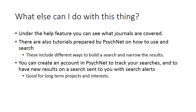So what else can you do with PsycNet? Under the help feature, you can see what journals are covered. You can also view tutorials written by PsycNet on how to use the various searches, including different ways to build a search and narrow results specific to the algorithms in PsycNet. You can also create an account in PsycNet that allows you to track your searches and have new results on a specific search sent to you in what's called a search alert — an email sent to you on a regular basis that you can determine. These are good for long-term projects and interests.